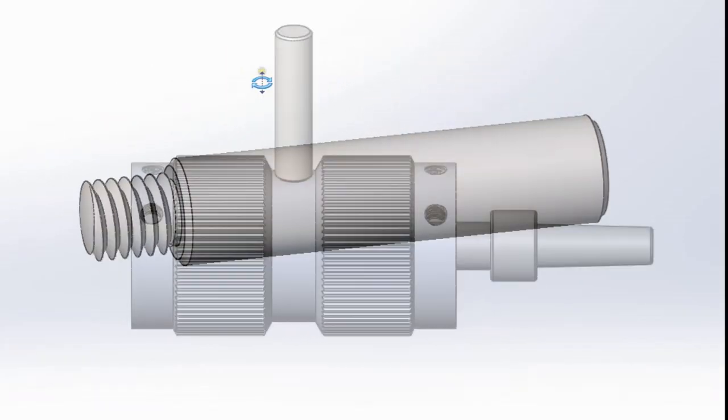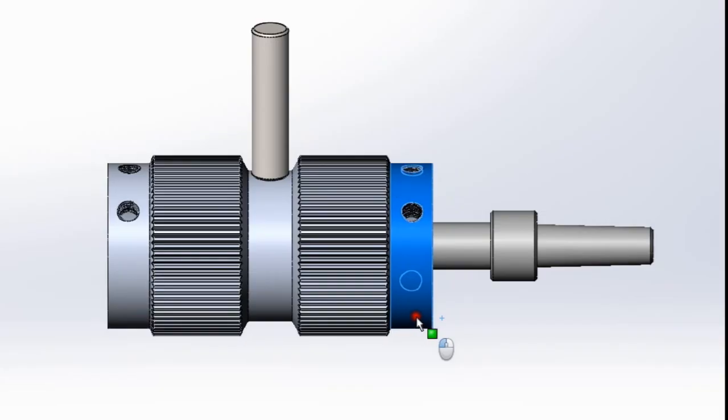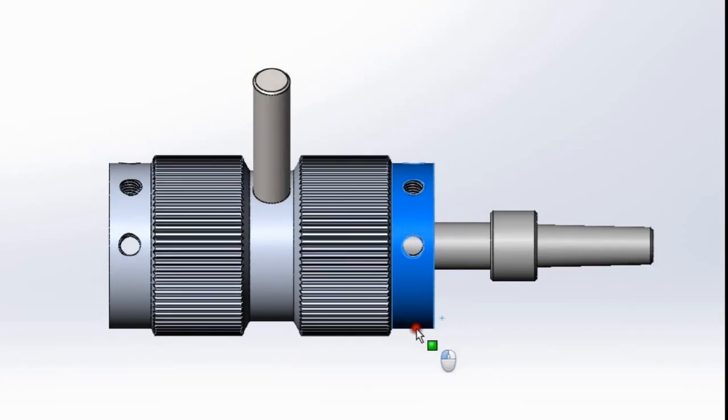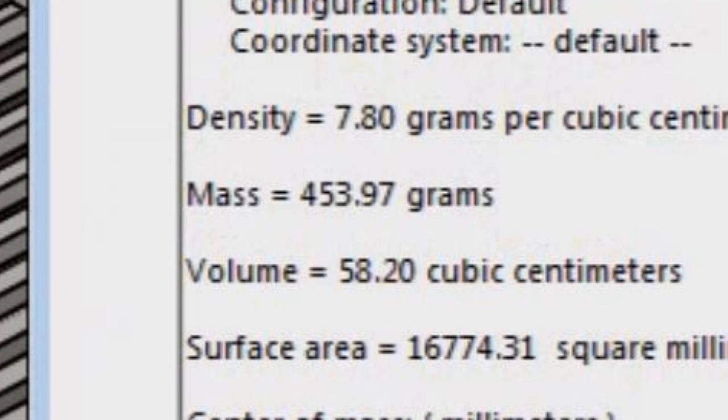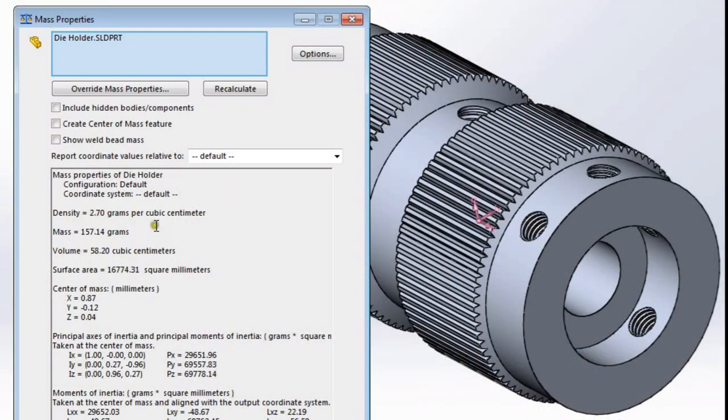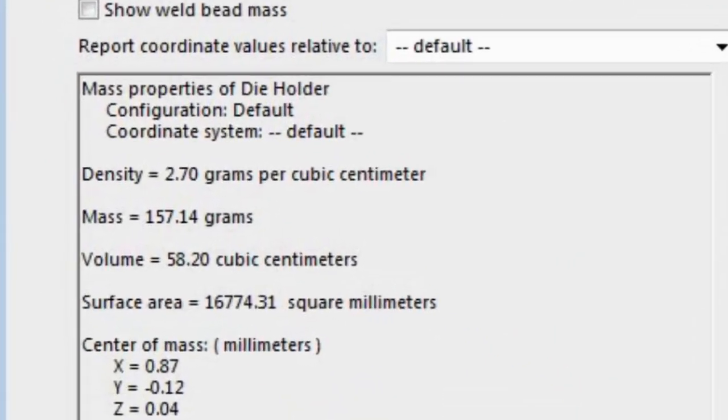Now the fact that it hangs out quite a bit from the tailstock influenced my choice of material. Solidworks has this great feature called mass properties which tells me that if I make it from steel, it's going to weigh in at almost half a kilo, which is a bit much to ask of the little Sherline tailstock. But with aluminum alloy, it comes in at around 150 grams, which I think will be fine.